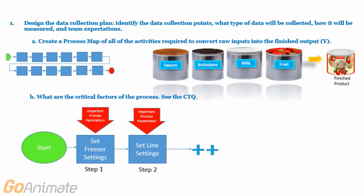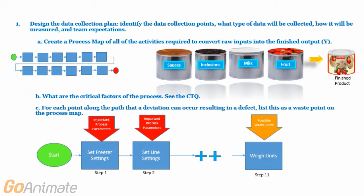What are the critical factors of the process? See the critical-to-quality diagram created in the Define phase. For each point along the path that a deviation can occur resulting in a defect, list this as a waste point on the process map.